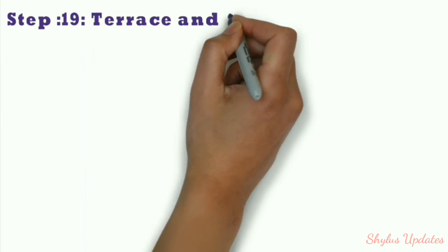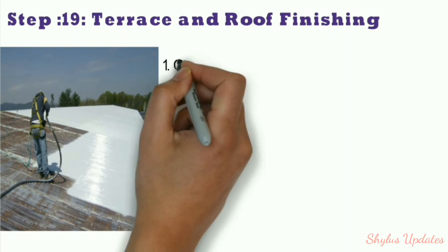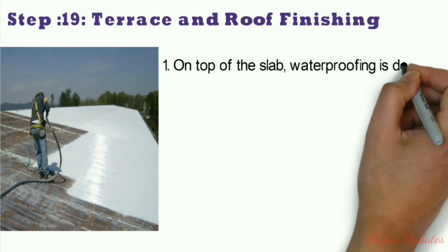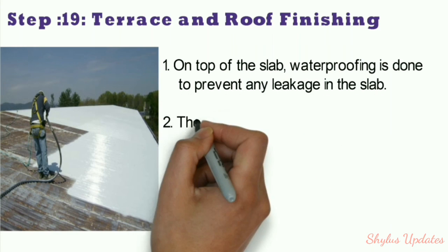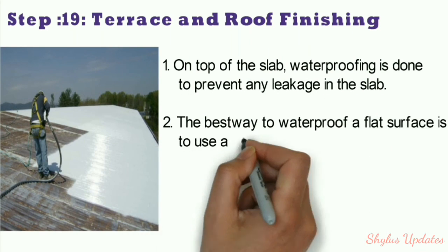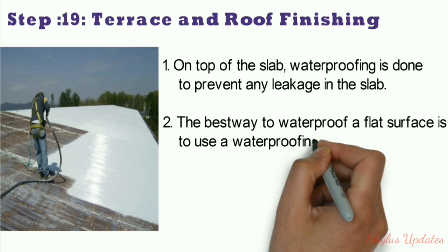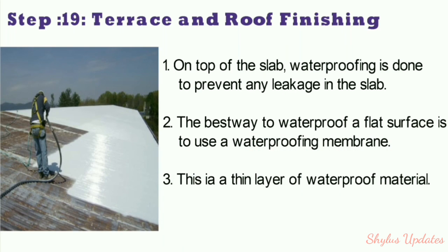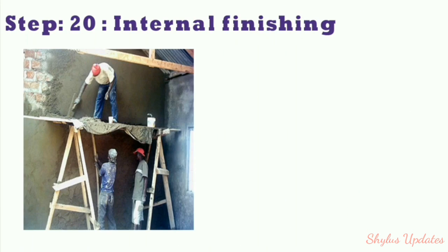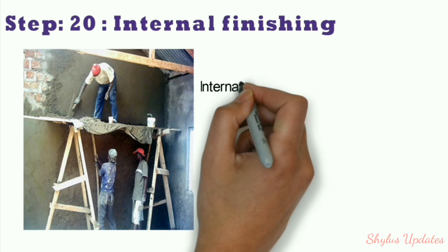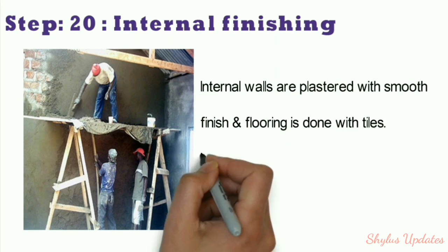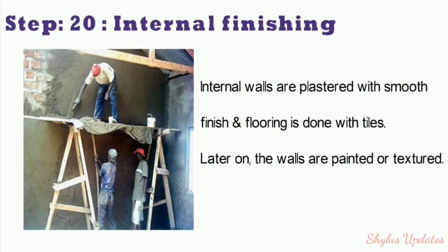Step 19: Terrace and roof finishing. On top of the slab, waterproofing is done to prevent any leakage. The best way to waterproof a flat surface is to use a waterproofing membrane. Step 20: Internal finishing. Internal walls are plastered with a smooth finish, and flooring is done with tiles.